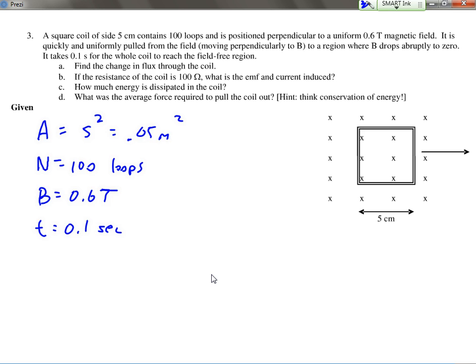So you guys can see that while the loop is inside the field, there is a full amount of flux. But as soon as it exits the field, of course, the flux is 0.